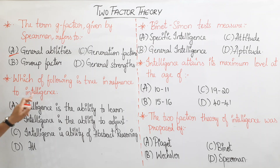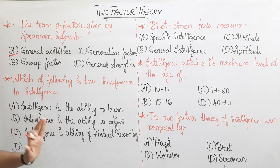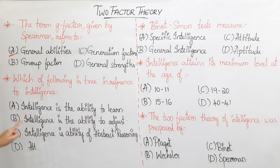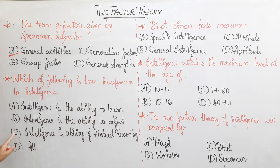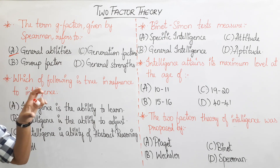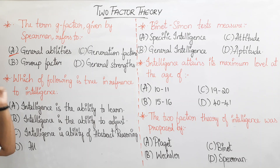Question 2: Which of the following is true in reference to intelligence? Option A: intelligence is an ability to learn. Option B: intelligence is an ability to adjust in society. Option C: intelligence is an ability of abstract reasoning — meaning developing ideas and reasoning skills. Option D: all of the above. The correct answer is Option D: all of the above.